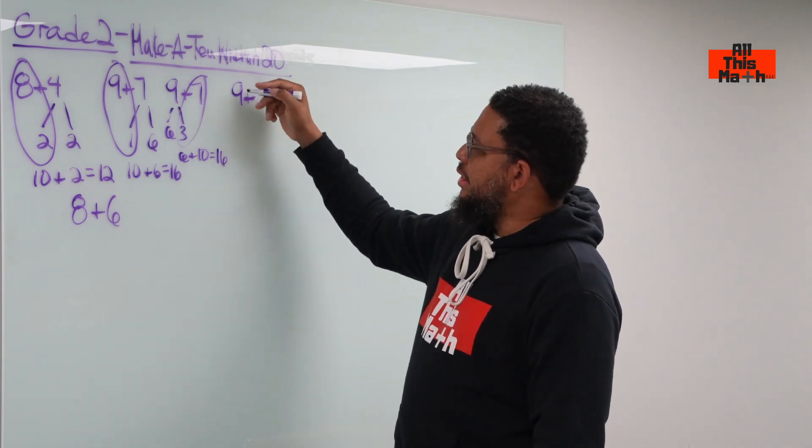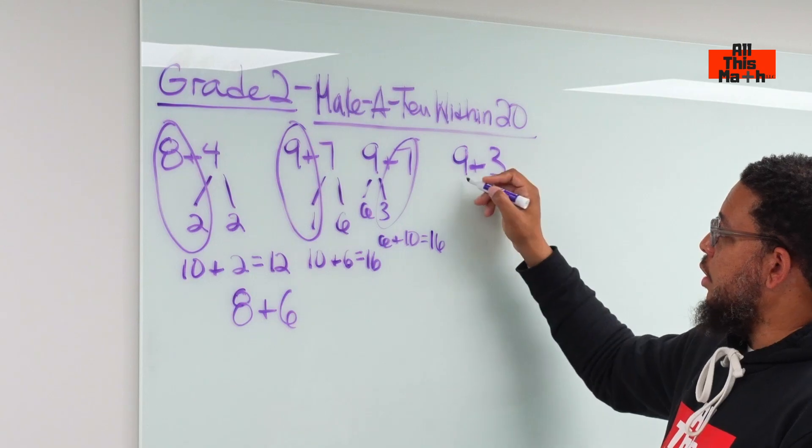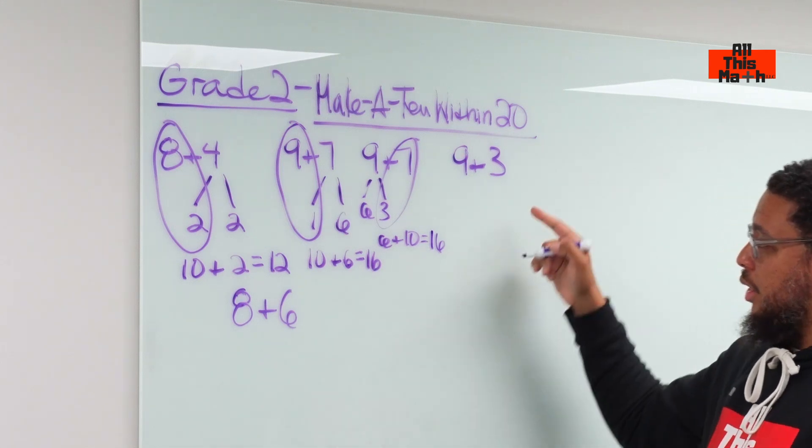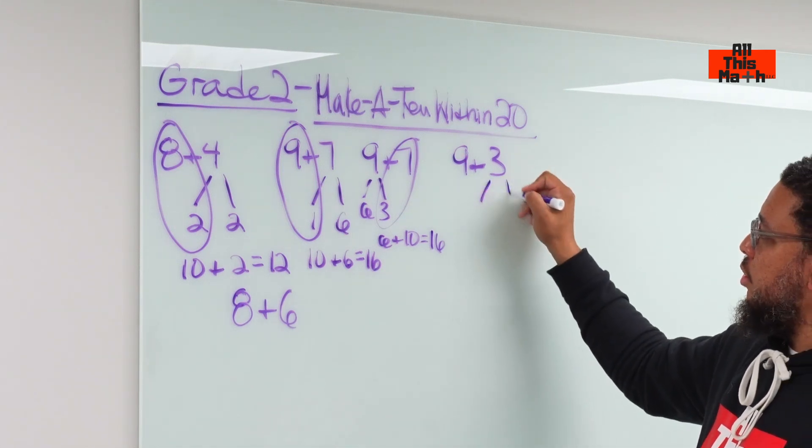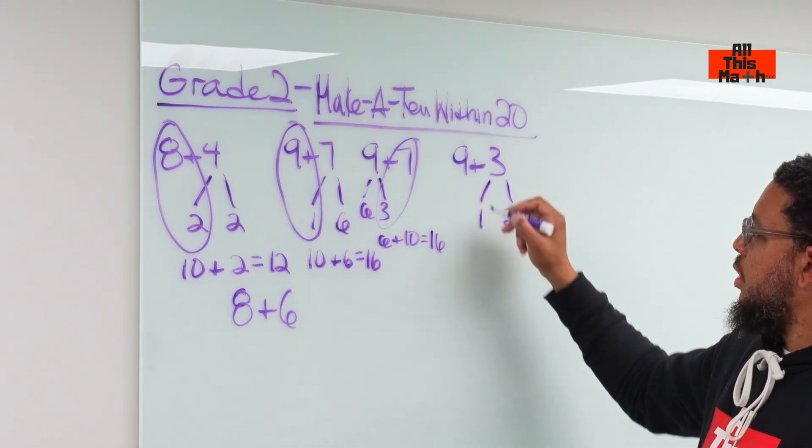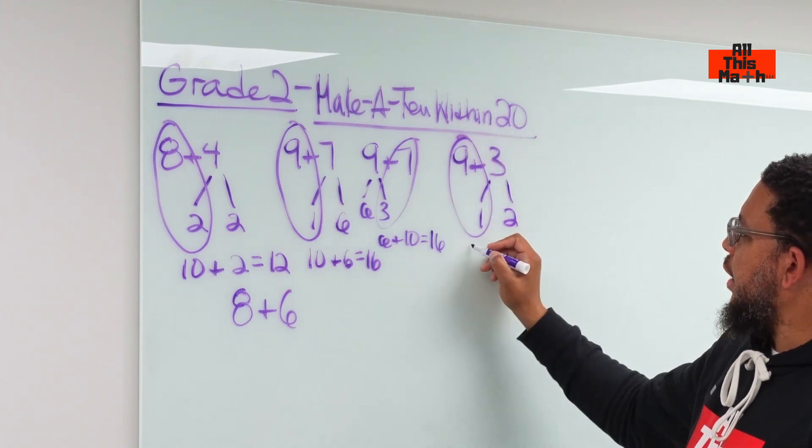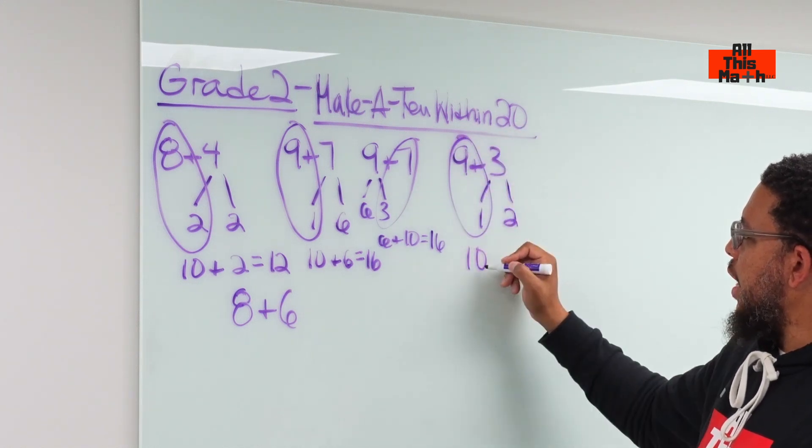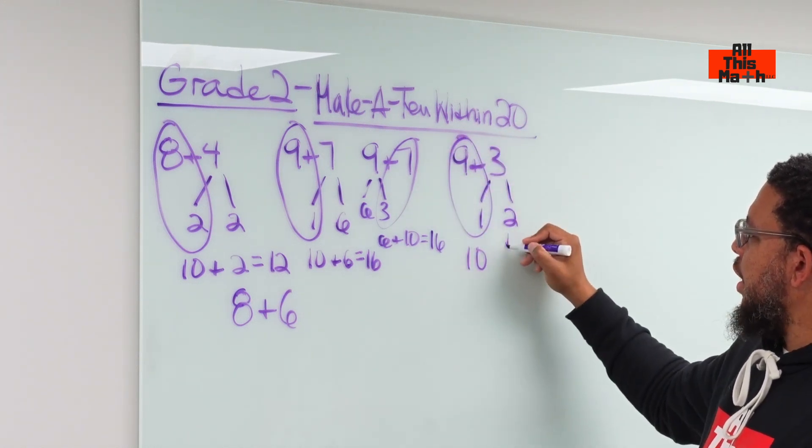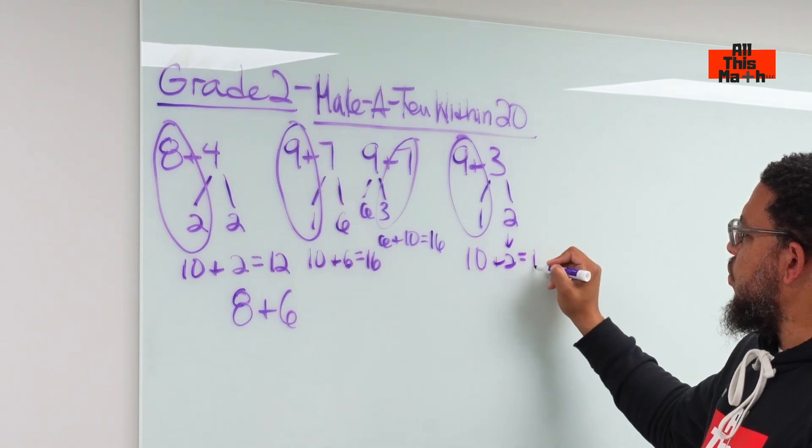Now, 9 plus 3 over here. Let's make this 9 into a 10. Where are we going to get the 1 from? We're going to get it from the 3. So, we're going to break the 3 down into 1 plus 2. And then we do 9 and 1. And then we have a 10 from the 9 and 1. Then we bring this 2 down. And we have 10 plus 2 which gives us 12.